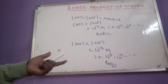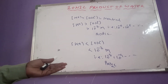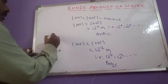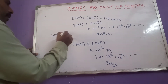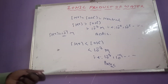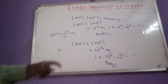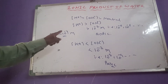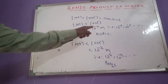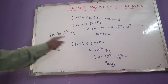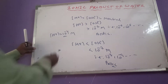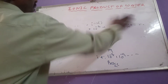They give questions like: an aqueous solution contains H+ concentration of 10⁻⁴ M — is it acidic, basic, or neutral? We check: 10⁻⁴ is greater than 10⁻⁷, so that solution is acidic in nature. This is a second type of question related to the ionic product of water.